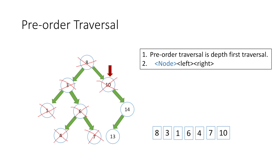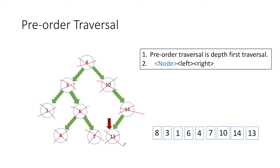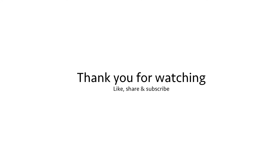So we move to its right child — node 14. We print its value, strike it off as traversed, and then move to its left child — node 13. We print its value and mark it as traversed. And we are done with our preorder traversal. We will cover inorder and postorder traversals in the next video. Thank you for watching.